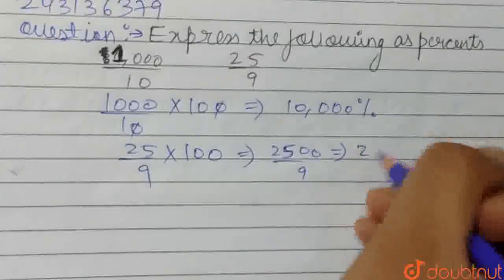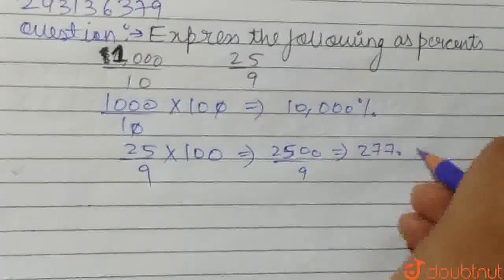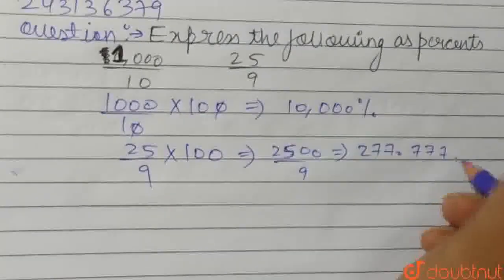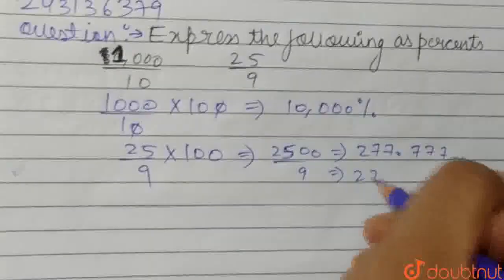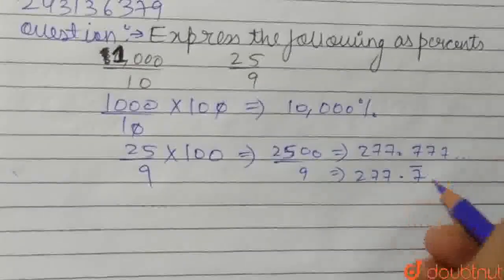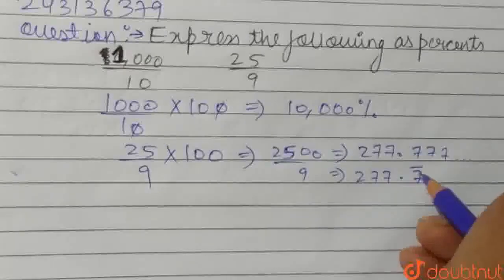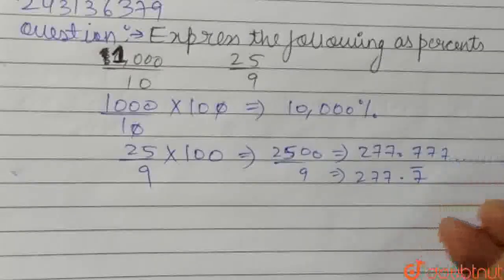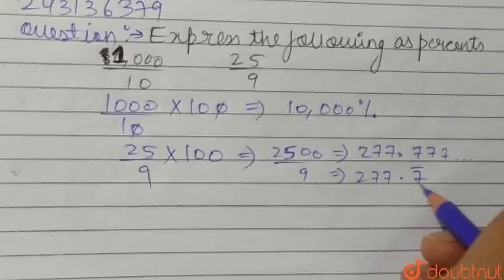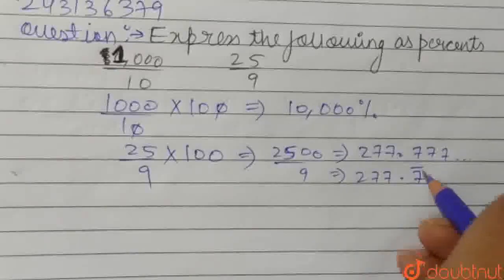...we get 277.777 and it's repeating. So we can say that 277.7 bar. We just place a bar in order to write this 777 multiple times. We write only one 7 and place a bar above it, on 7.